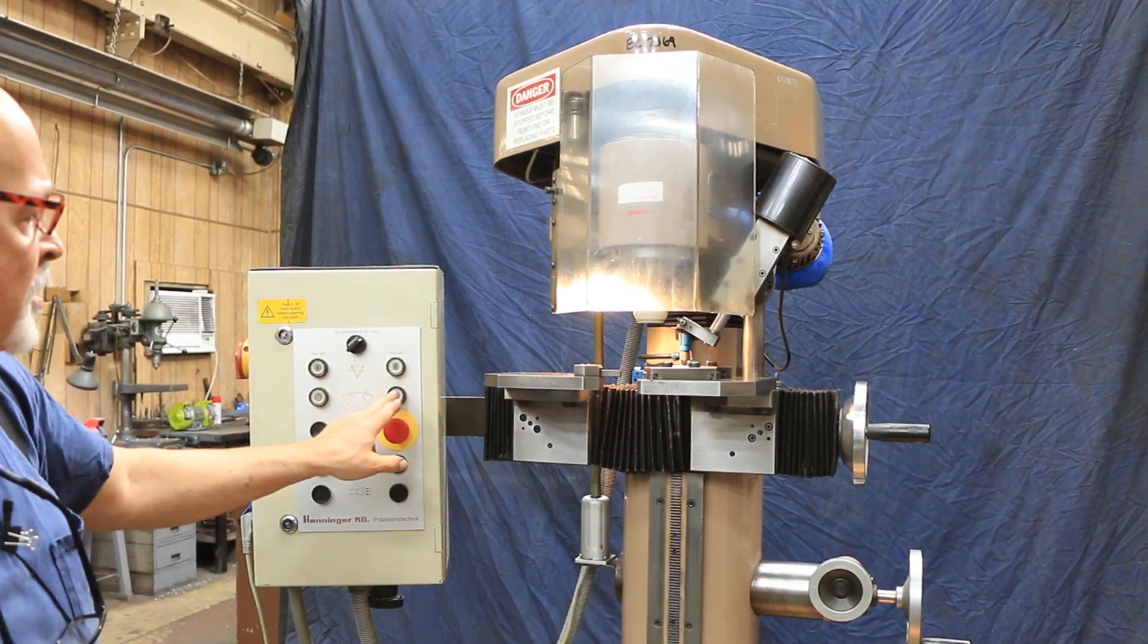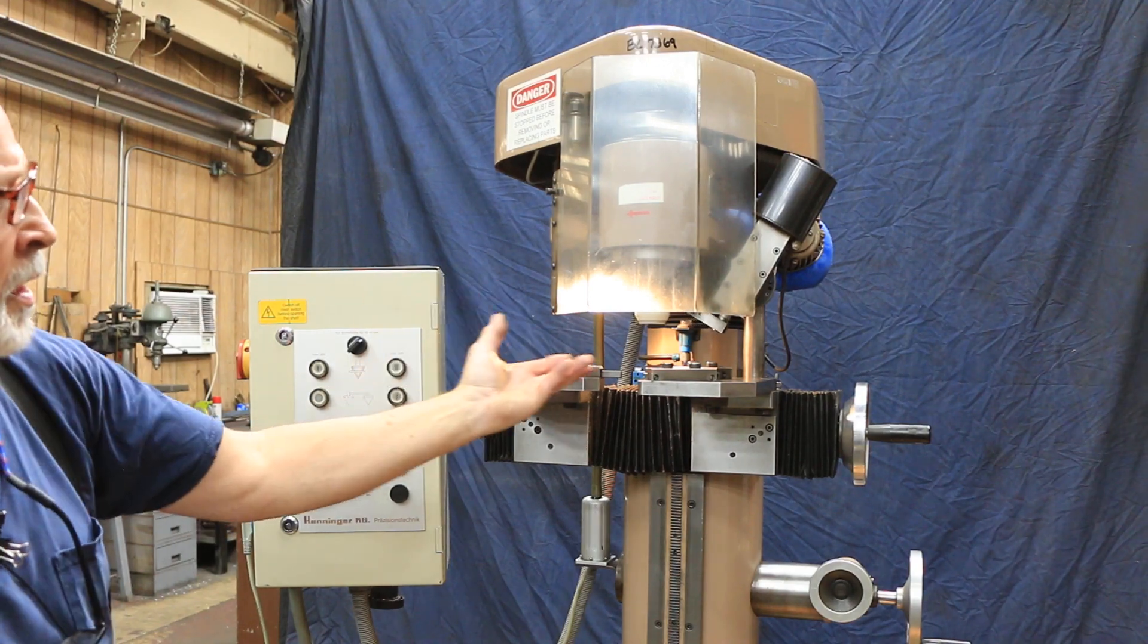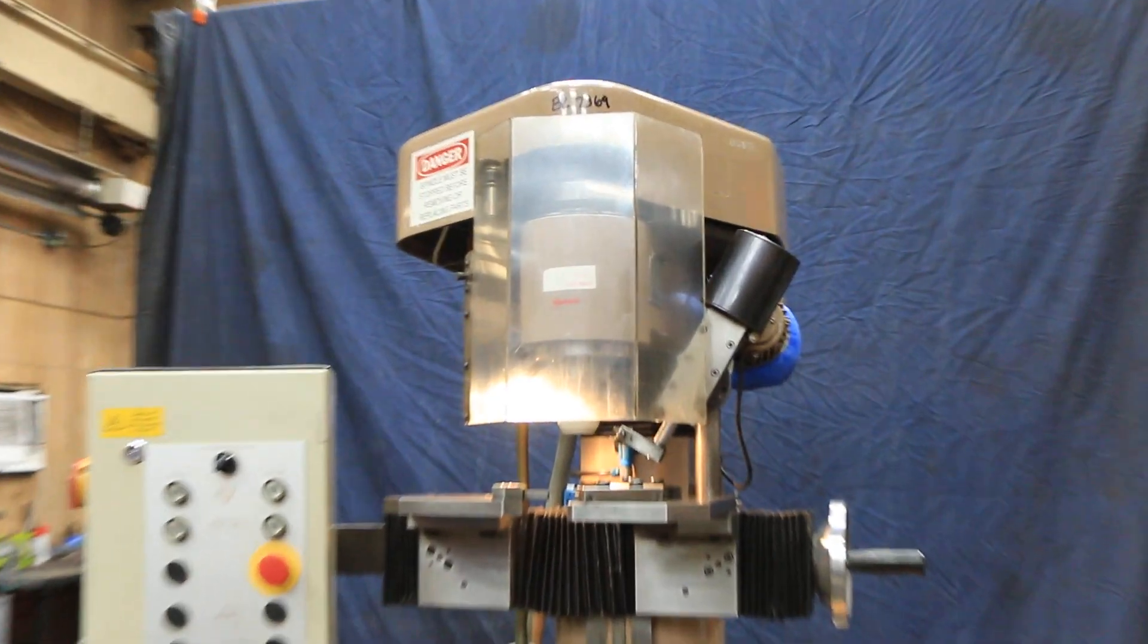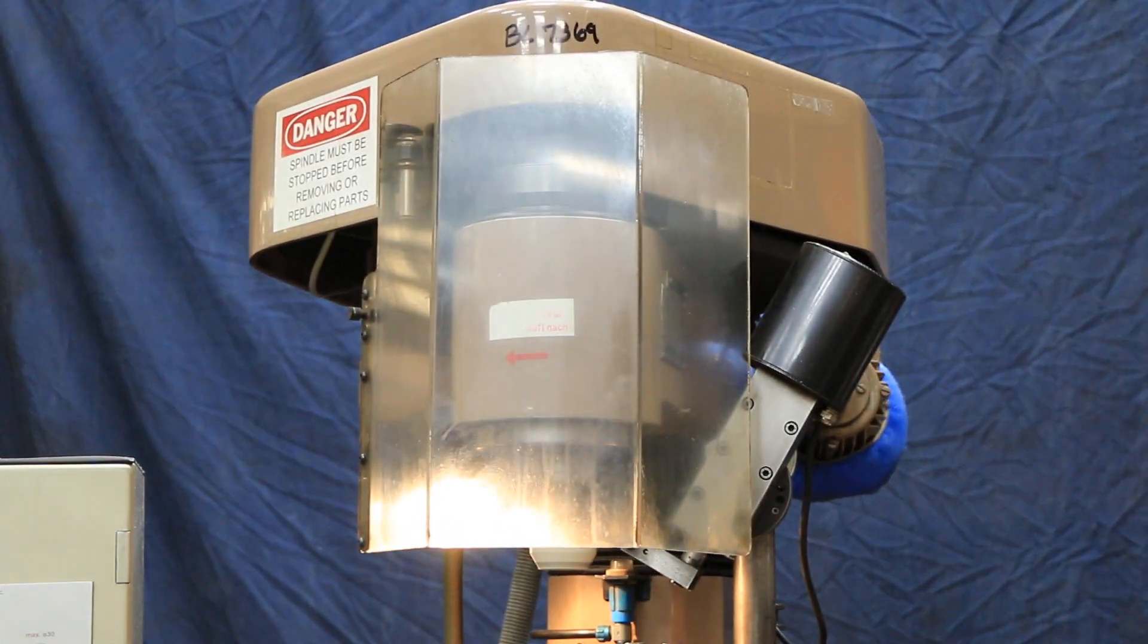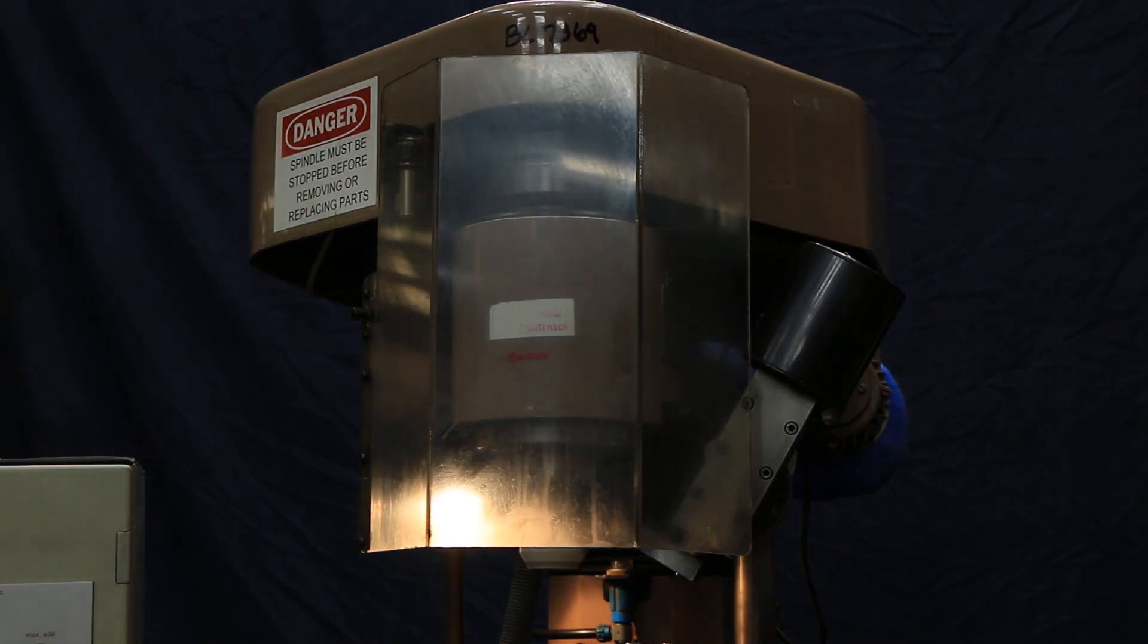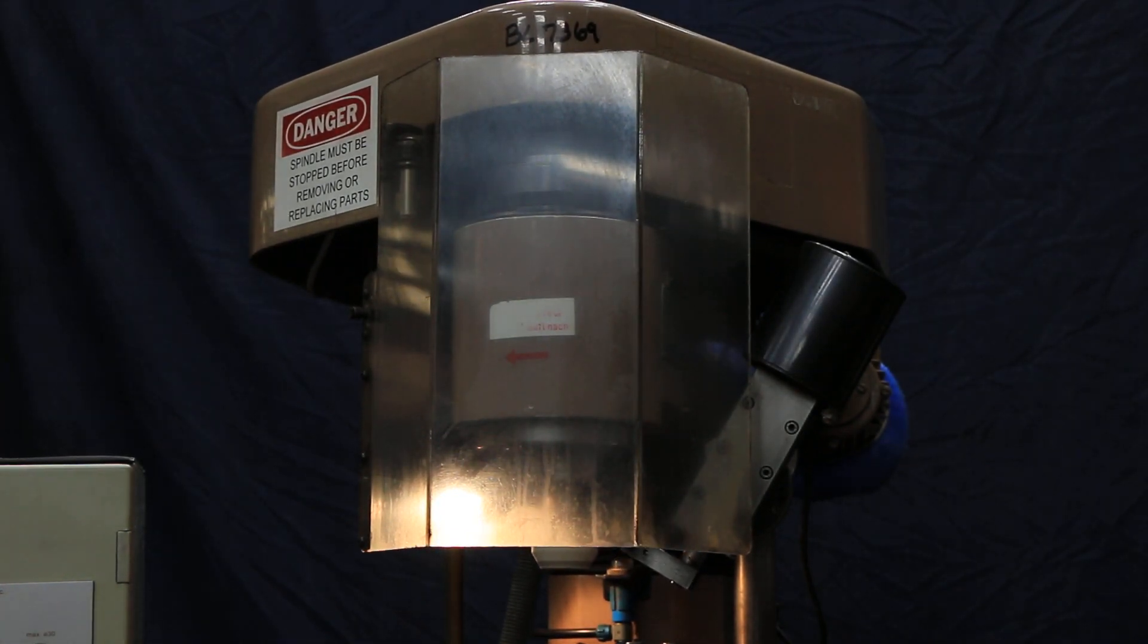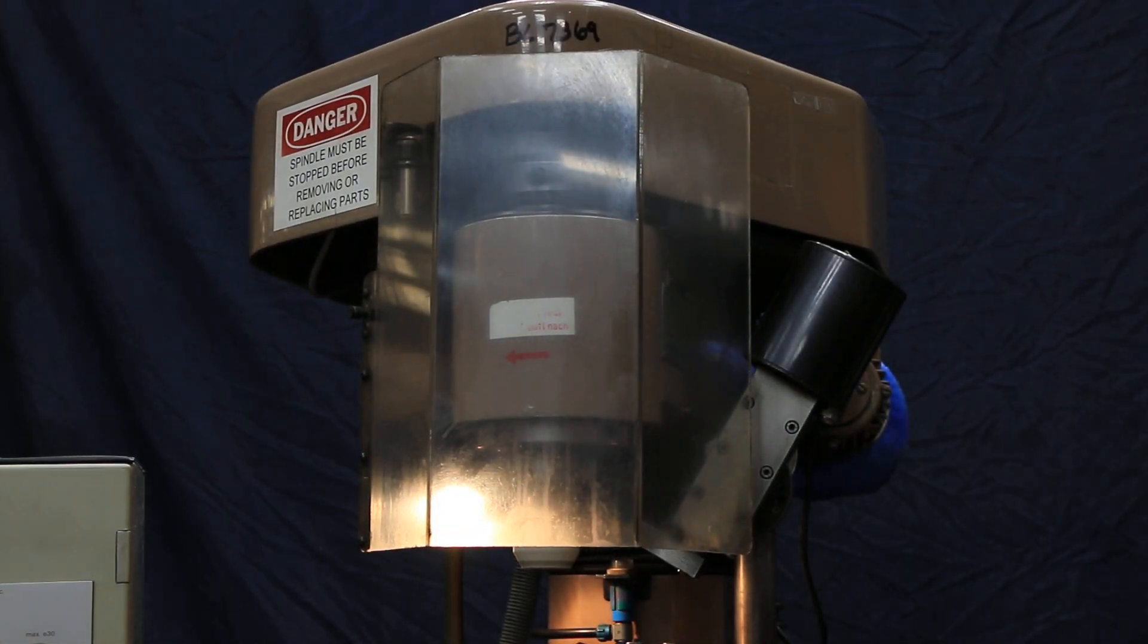It also has this orbiting function on it, that will be explained in the literature. If you Google this Henninger center grinder, what you do with that. We can turn that off.